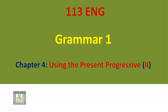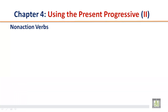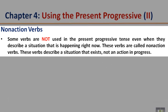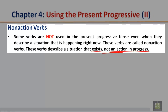English 113 Grammar 1, Chapter 4: Using the Present Progressive, Part 2 — Non-Action Verbs. Some verbs are not used in the present progressive tense, even when they describe a situation that is happening right now. These verbs are called non-action verbs. They describe a situation that exists, not an action in progress.